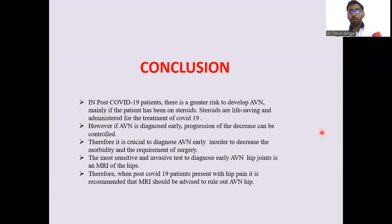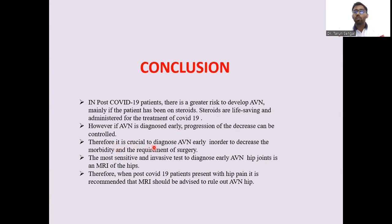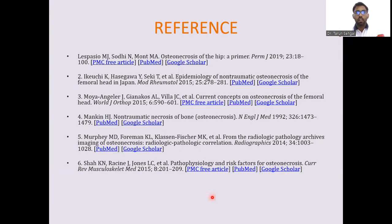Conclusion: In post-COVID-19 patients there is a greater risk of developing AVN, mainly if the patient has been on steroids. Steroids are life-saving and essential for treatment of COVID-19; however, if AVN is diagnosed early, progression can be controlled. Therefore, it is crucial to diagnose AVN early to decrease morbidity and requirement for surgery. The most sensitive test to diagnose early AVN of the hip joint is MRI of both hip joints. When post-COVID-19 patients present with hip pain, MRI should be advised to rule out AVN.